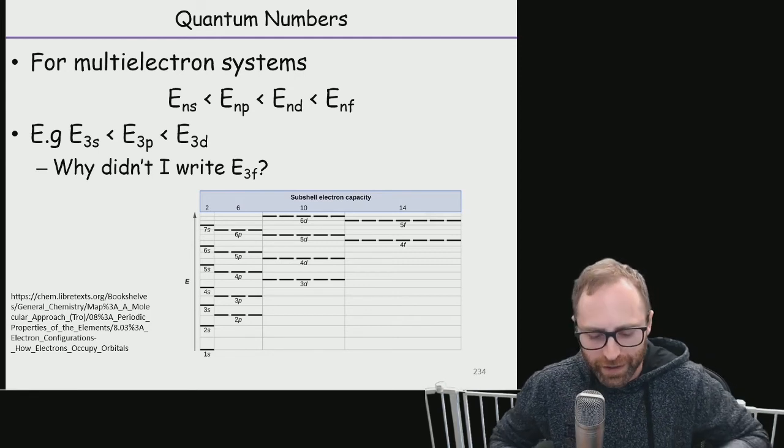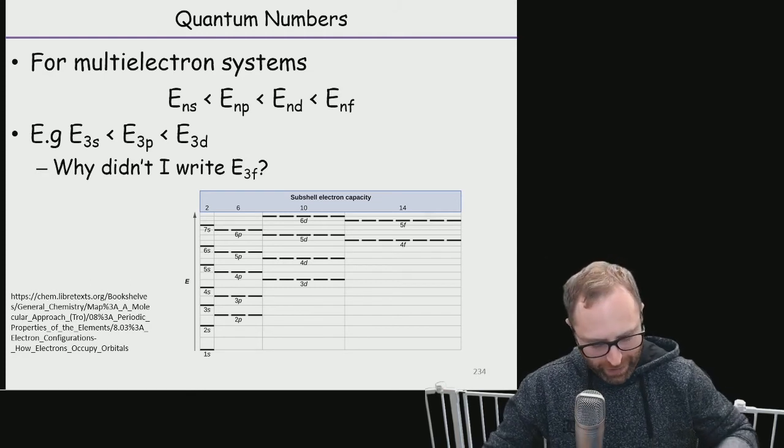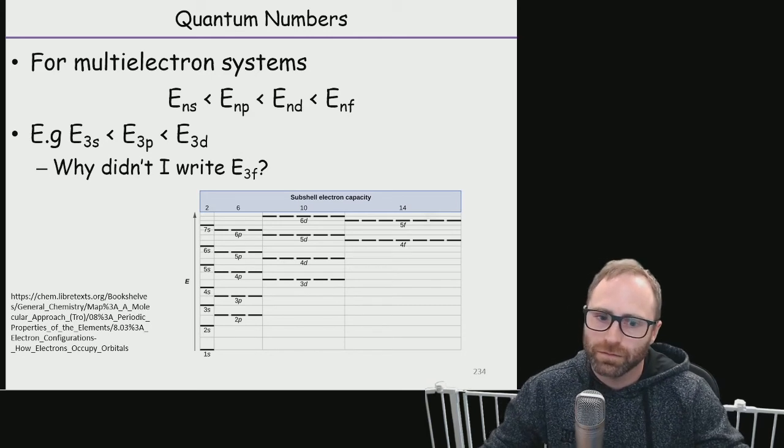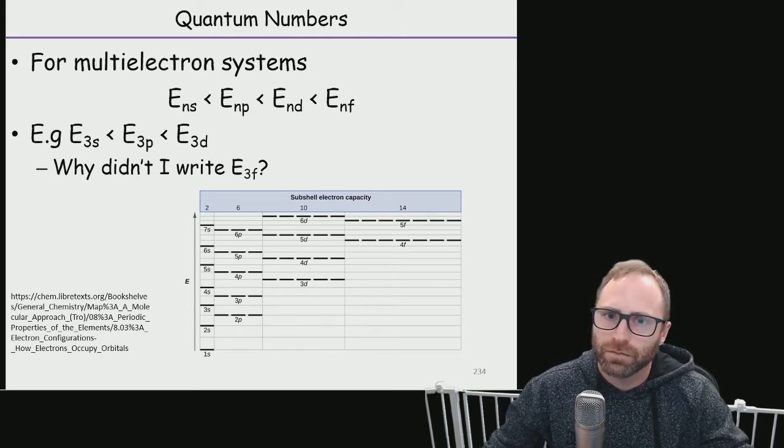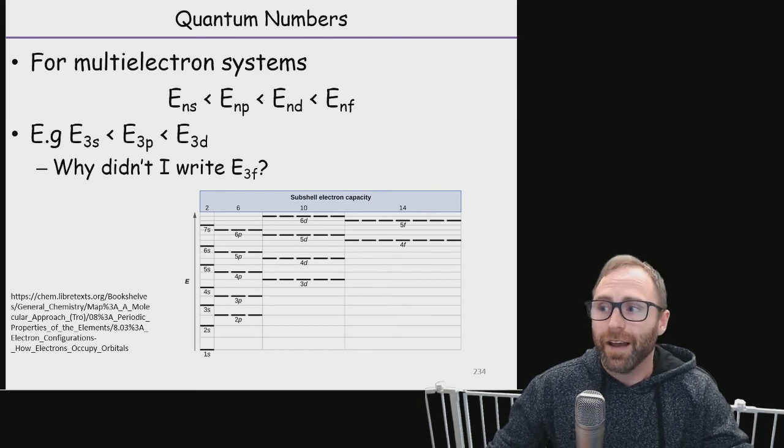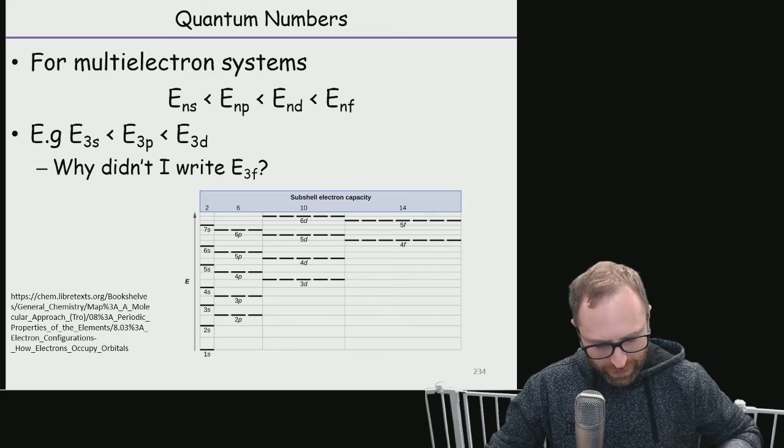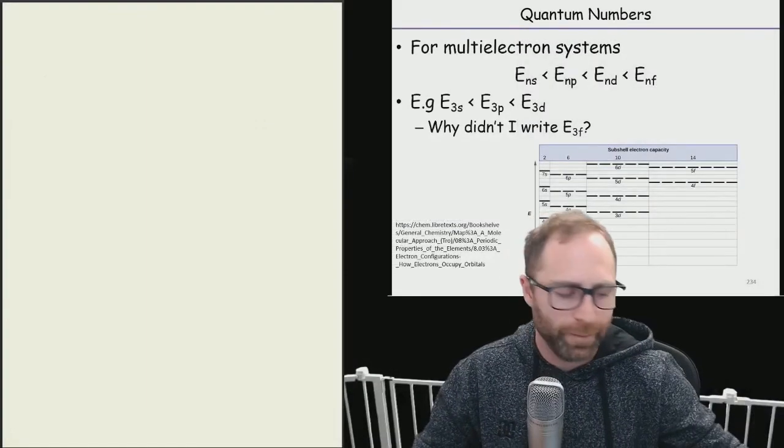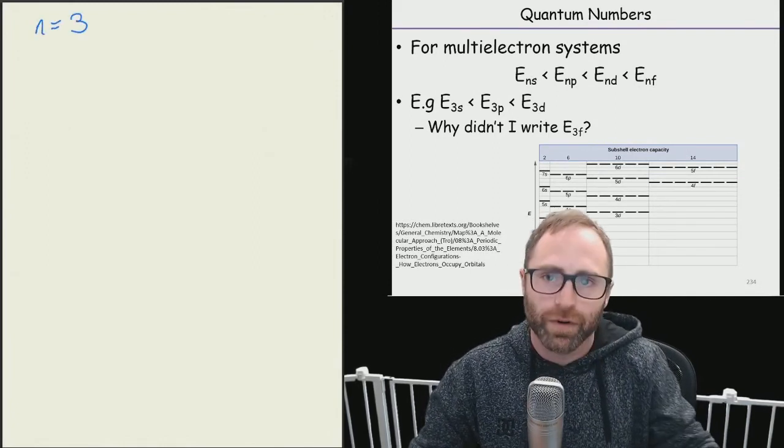All right, you got any thoughts on why we didn't write out 3f? Because in the next category there isn't a 3f. Yeah, there is no 3f orbital. So let's show a good example of how that or what we mean by that.